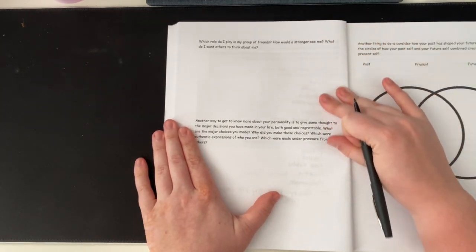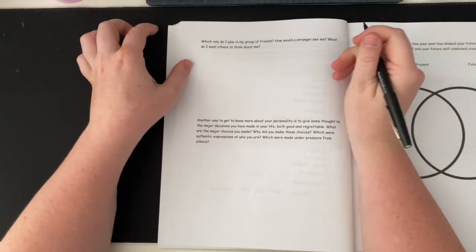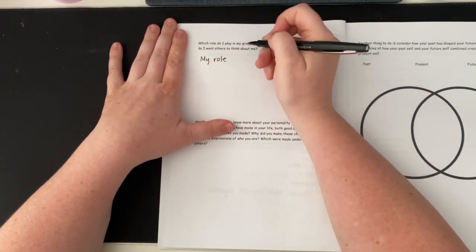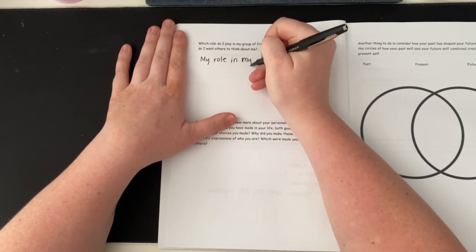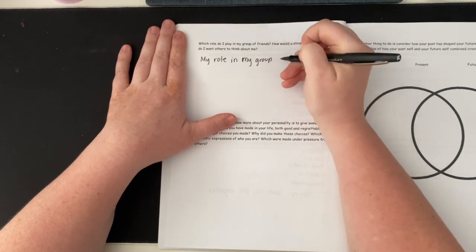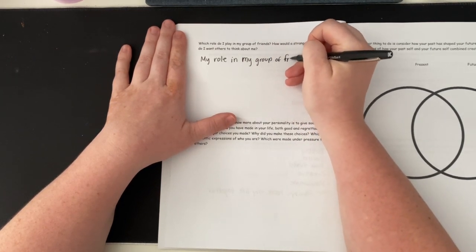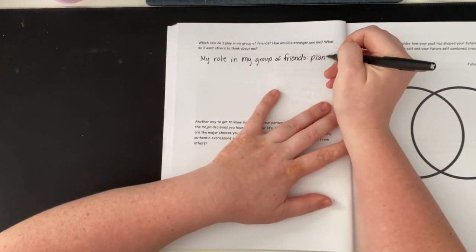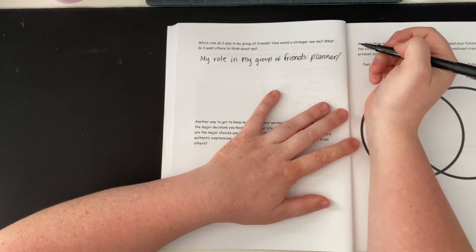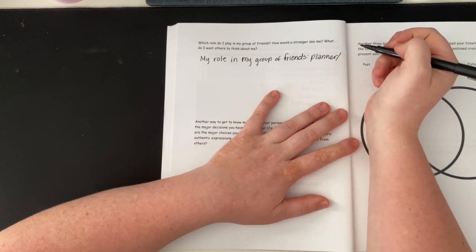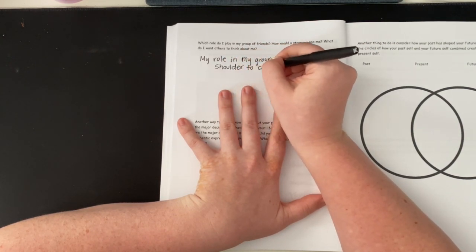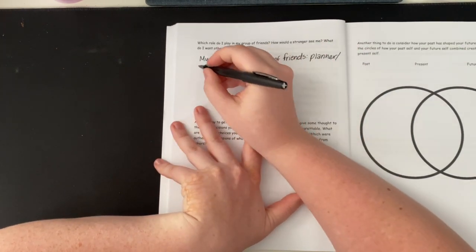Which role do I play in my group of friends? How would a stranger see me? What do I want others to think about me? So, my role in my group of friends? I am the planner. I like to call it. Slash, I guess like, shoulder to cry on. I'm just always there for people.